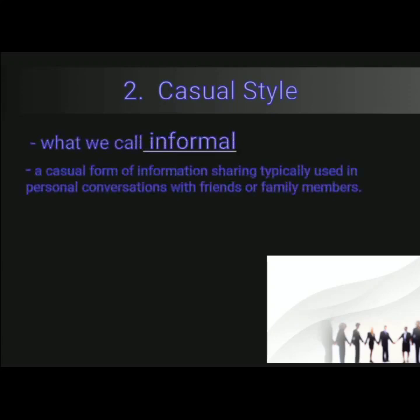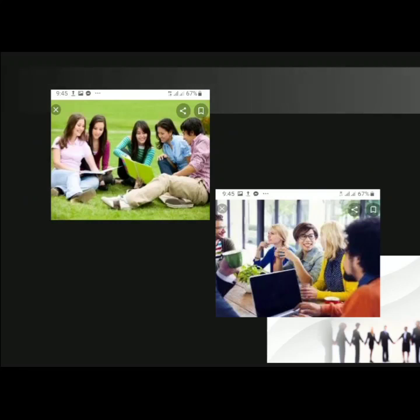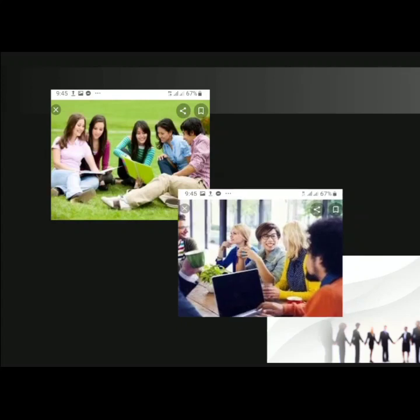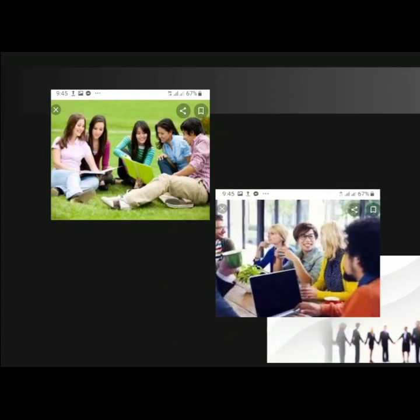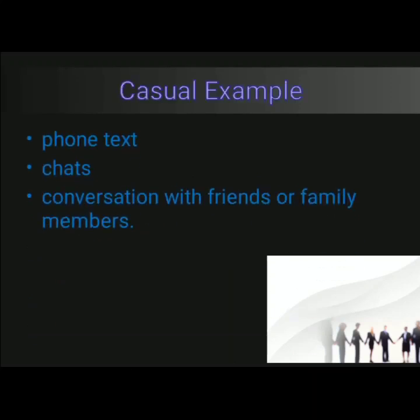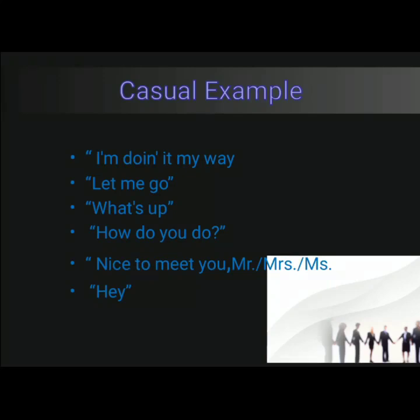Now let's proceed with the casual style. In casual style, it is what we call informal, or a casual form of information sharing, typically used in personal conversation with friends or family members. As you can see in the picture, we have friends together chatting and also a group of colleagues in a meeting. Casual style examples include phone texts, chats, or conversations with friends or family members. For example: 'I'm doing it my way,' 'Let me go,' 'What's up,' 'How do you do,' or 'Nice to meet you,' and 'Hey.'